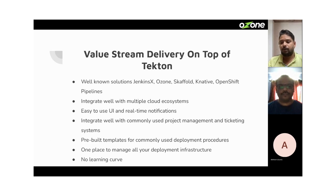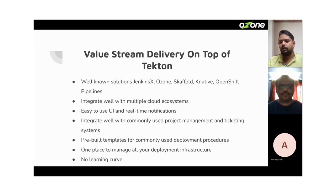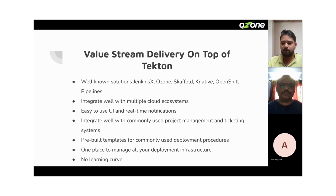Scaling the organization — say you're 40 developers now, tomorrow you might be 500 developers. You need to have all these moving parts in place before you scale. Otherwise, once you scale, you won't see the benefits of your automation processes. It should not be a single point of contact who knows all of it — it should be standardized within a framework. That is where value stream delivery platforms come in and really help you scale your DevOps transformation processes.